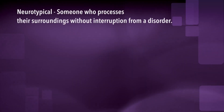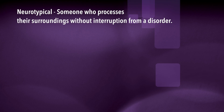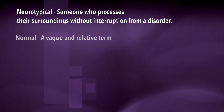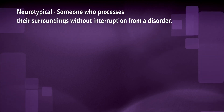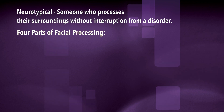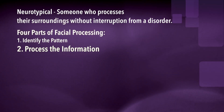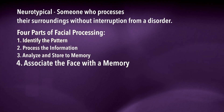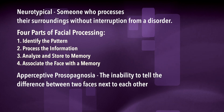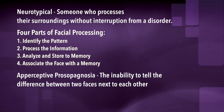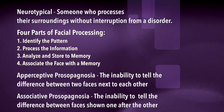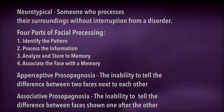Moving on, there are two more subgroups of prosopagnosia, but they have more to do with the history of the disorder, so for time's sake, we'll go over that in the next episode. For now, a quick review of terms. Neurotypical: someone who processes their surroundings without interruption from a disorder. Personally, I'm not offended by the use of the word 'normal,' but it is a relative term and one that can rub a lot of people the wrong way. Facial processing — the four major parts for our purposes are: identify the pattern, process the information, analyze and store to memory, and associate the face with the memory. Aperceptive prosopagnosia: the inability to tell the difference between two faces next to each other. Associative prosopagnosia: the inability to tell the difference between faces when they are shown one after another. You can take a second to process all that — but I'm not going to give you one, so just pause the video now.